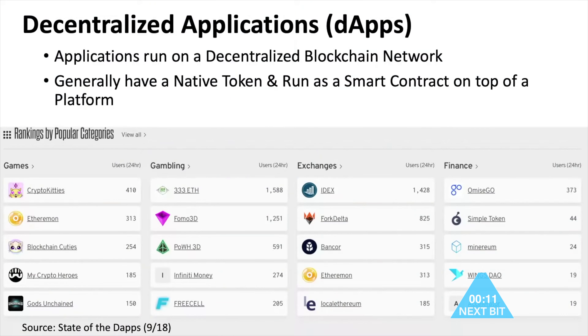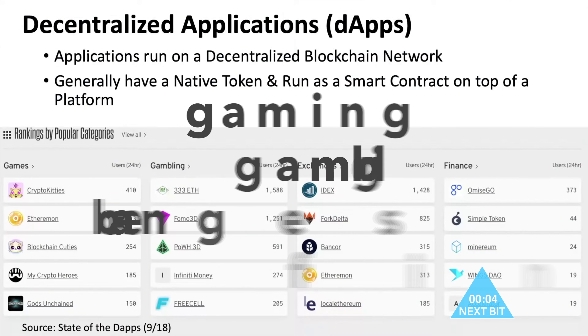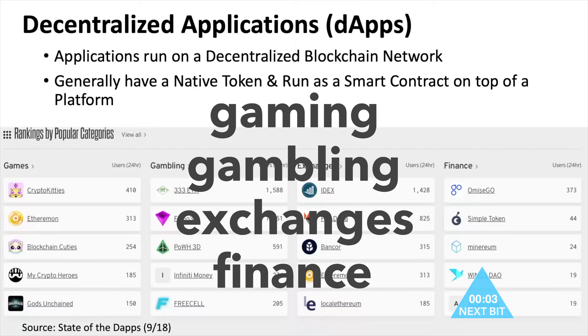This is a list that I pulled off the internet yesterday, similar to your reading. These are the actual dApps that are working at the highest level: gaming, gambling, exchanges, and finance.